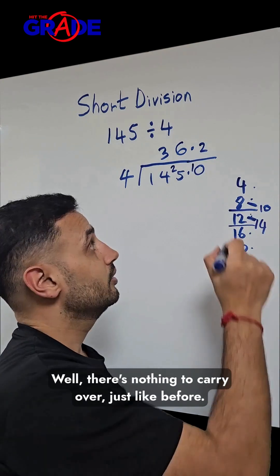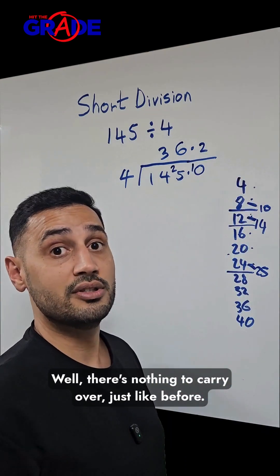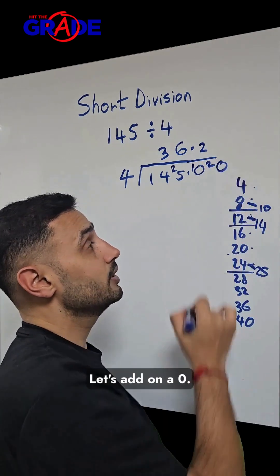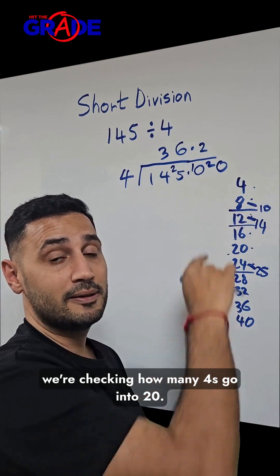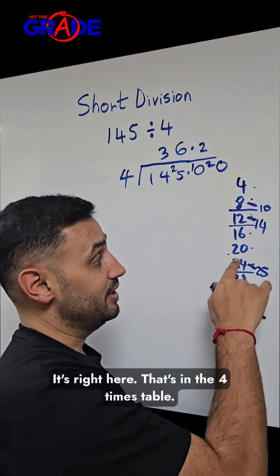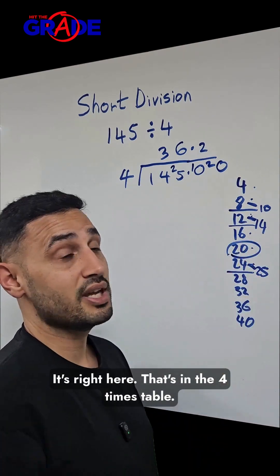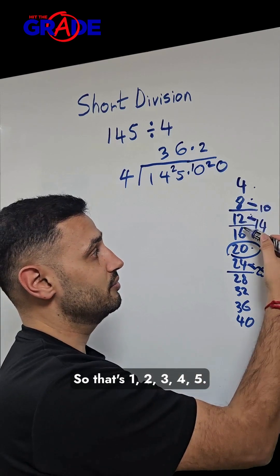Let's carry the 2 over. Well, there's nothing to carry over. Just like before, let's add on a 0. This time we're checking how many 4s go into 20. Bingo! It's right here. That's in the 4 times table. So that's 1, 2, 3, 4, 5.